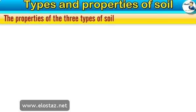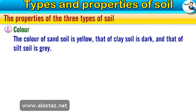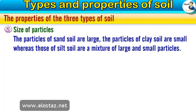From the previous activities we can conclude the properties of the three types of soil. Number one, color: the color of sand soil is yellow, that of clay soil is dark, and that of silt soil is gray. Number two, size of particles: the particles of sand soil are large, the particles of clay soil are small, whereas those of silt soil are a mixture of large and small particles.